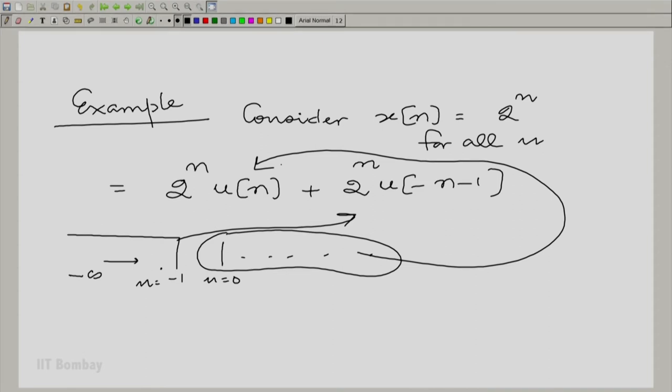So, you know in principle, when you take the sum, if you use linearity, you should be able to write down the individual z transforms. So, 1 by 1 minus 2 z inverse, which corresponds to 2^n u(n) with |z| greater than 2.